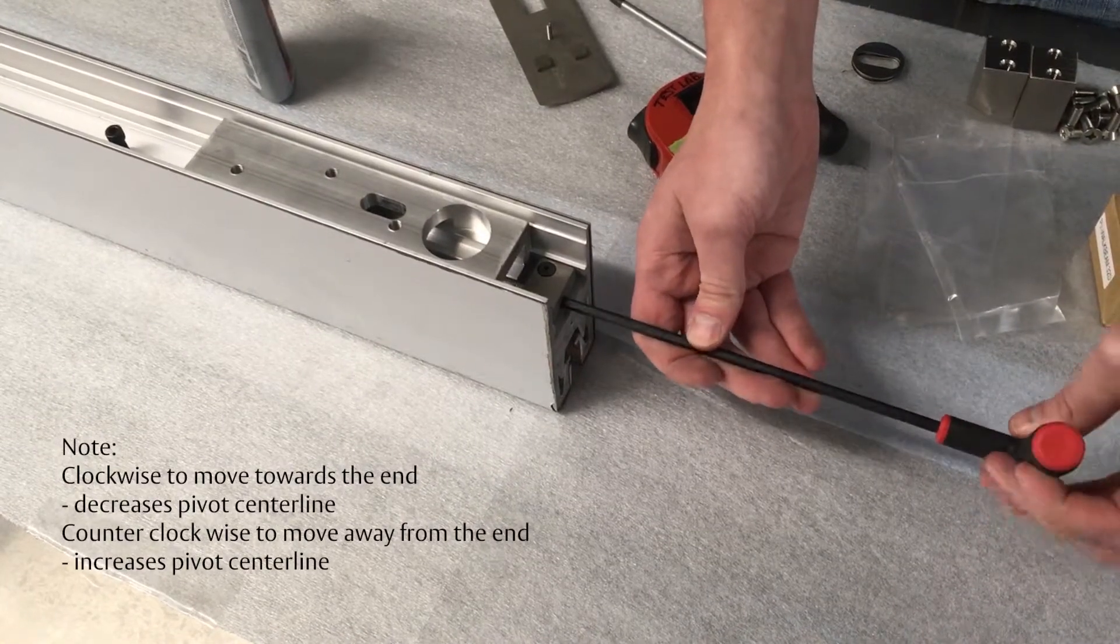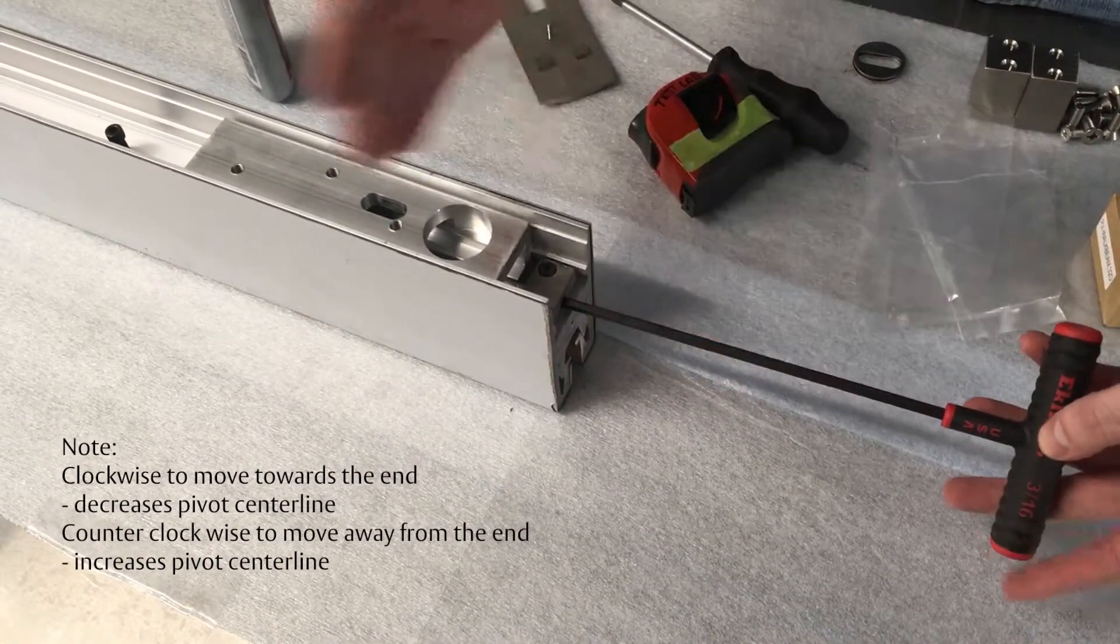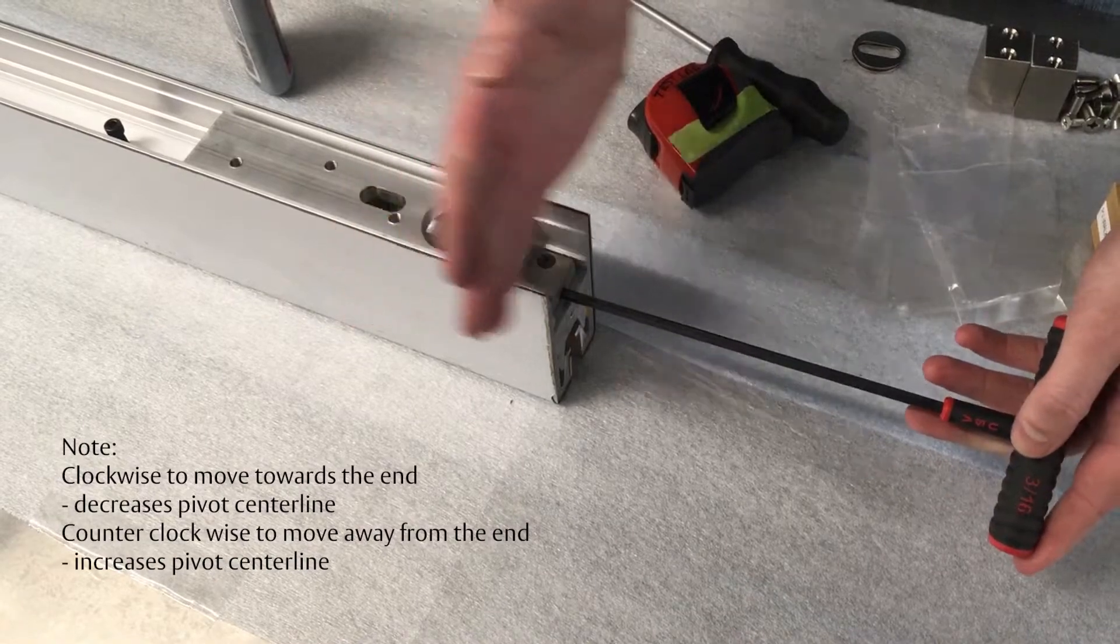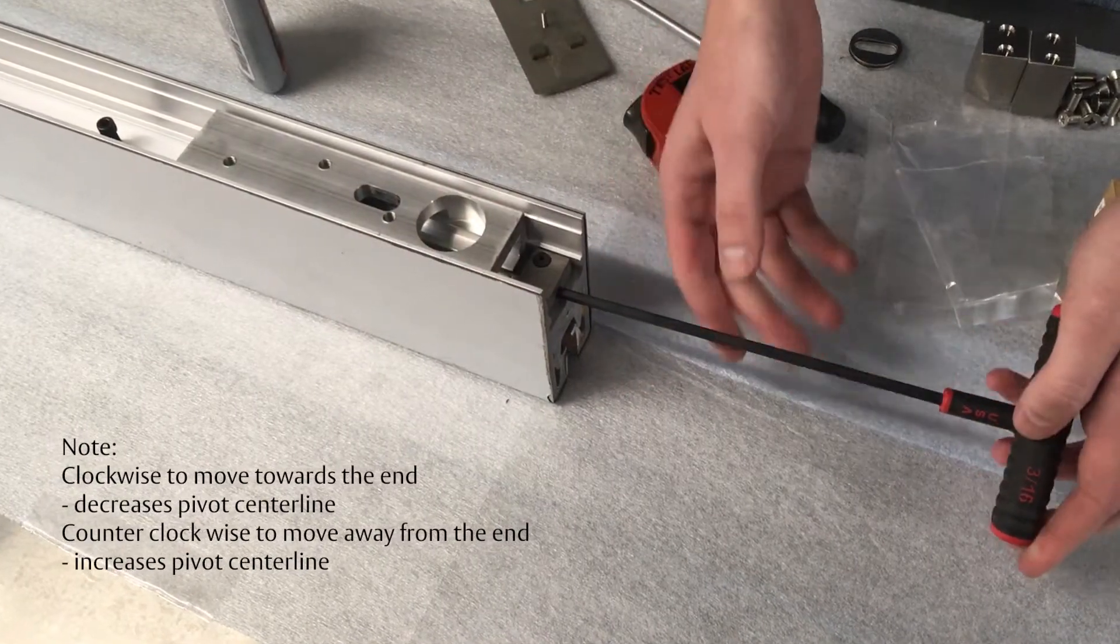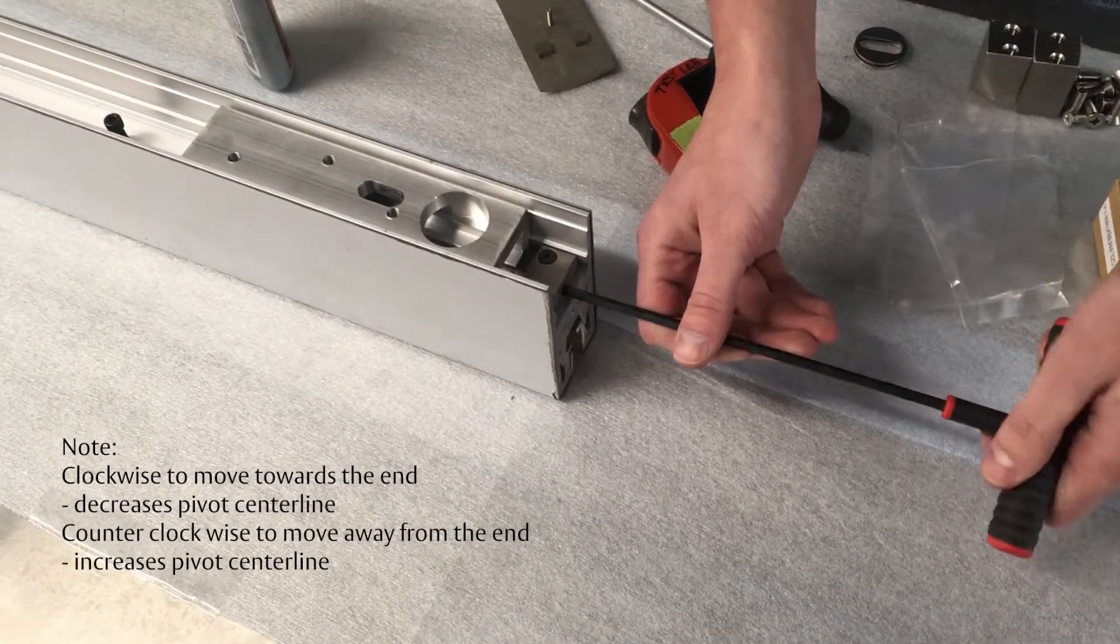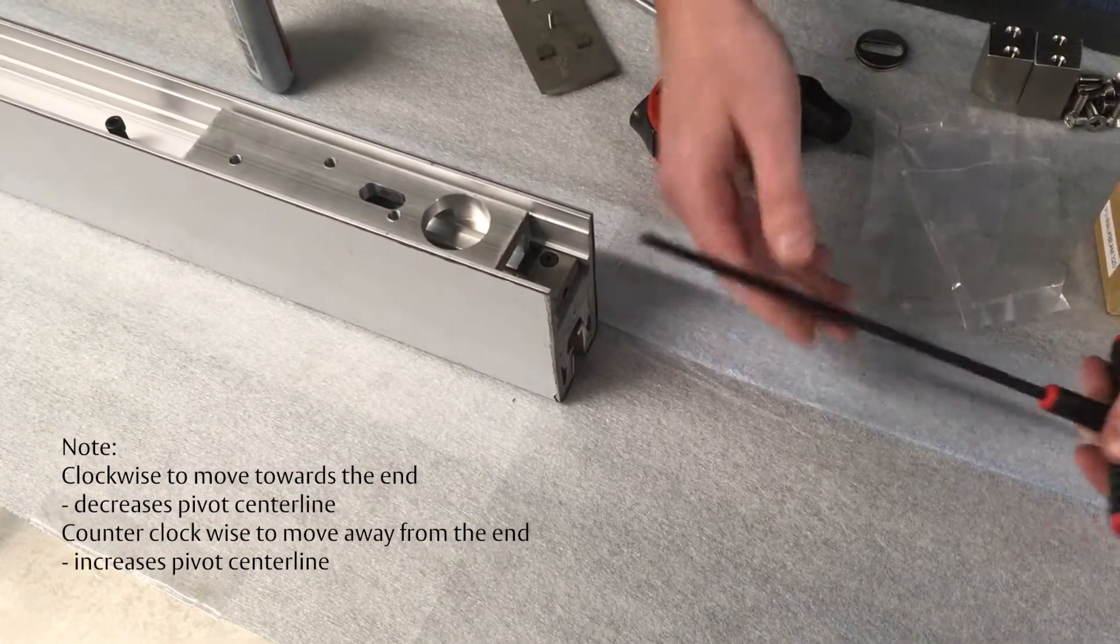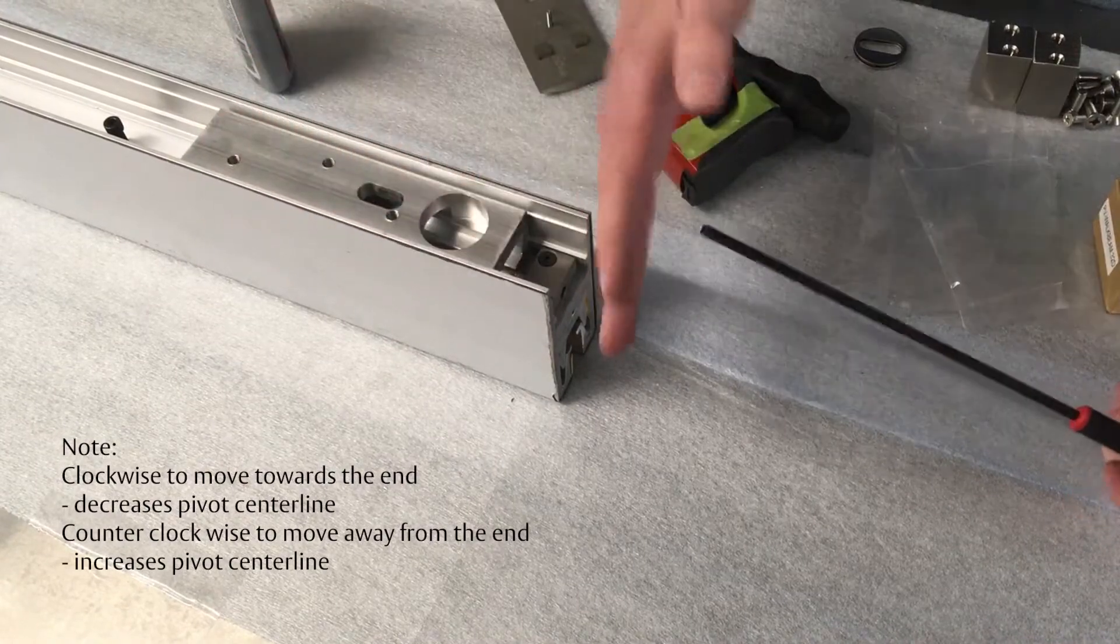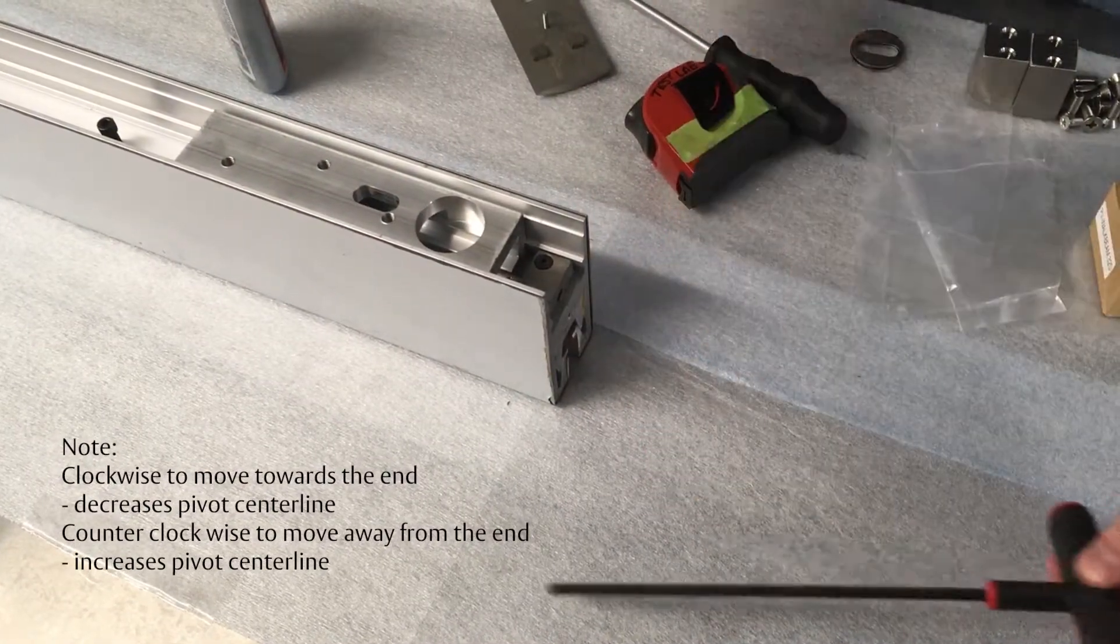You can turn the adjuster screw clockwise to move the PVPL closer to the end of the door rail, which would decrease your pivot center line, or counterclockwise to adjust the PVPL away from the end cap, which would increase your pivot center line.